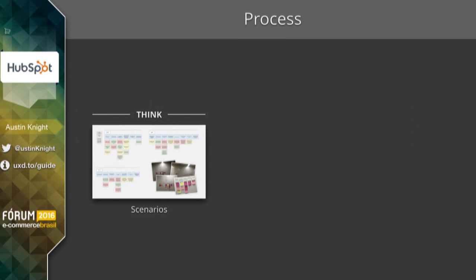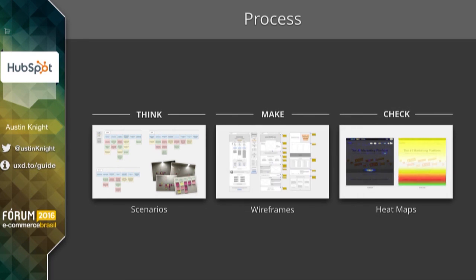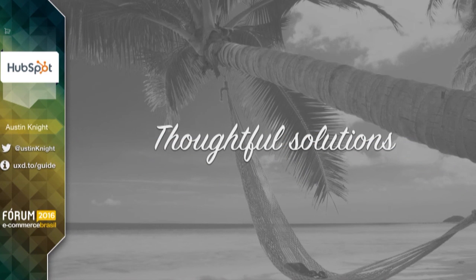Some example deliverables: in the Think phase we could create scenarios, in the Make phase we could create wireframes, and in the Check phase we could have heat maps — like you can see here — where they actually show how people click. Essentially, what this empowers us to do is create thoughtful solutions and well-informed designs for the problems that we have.